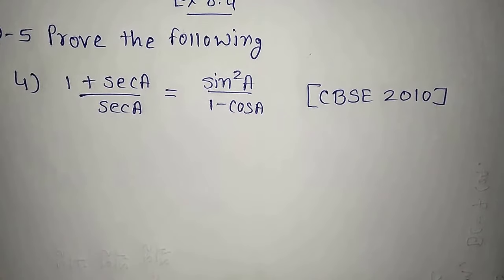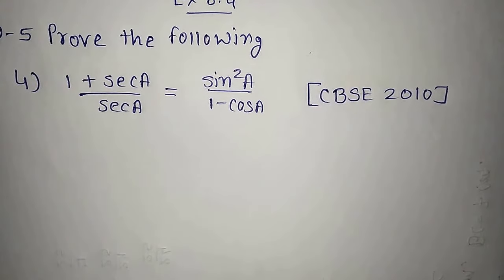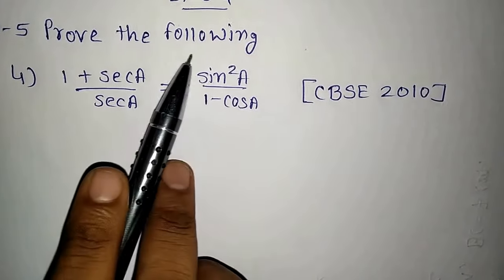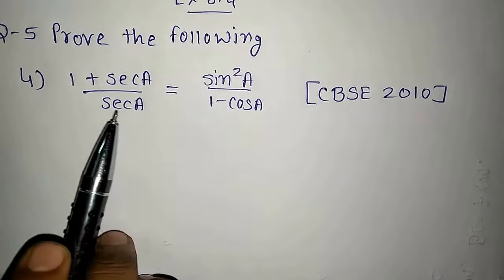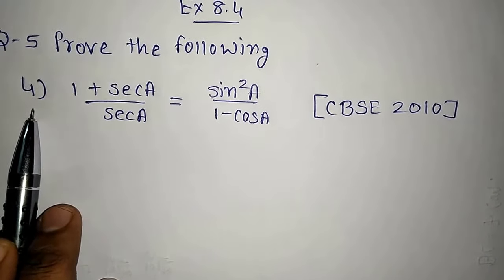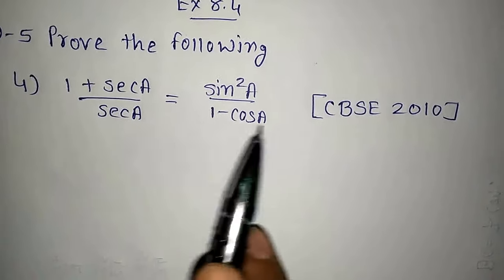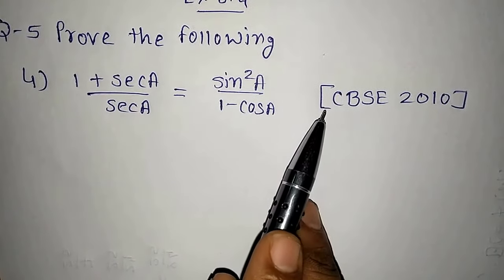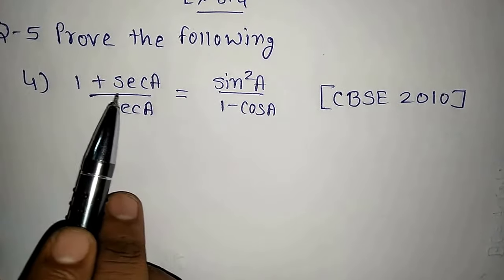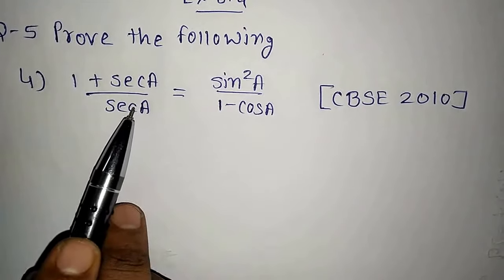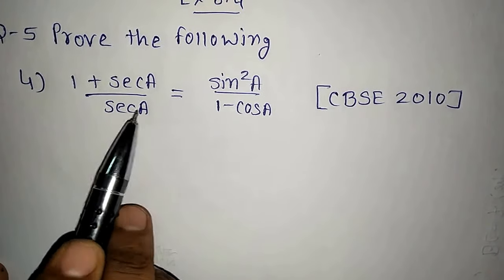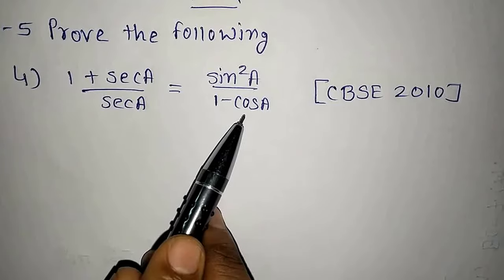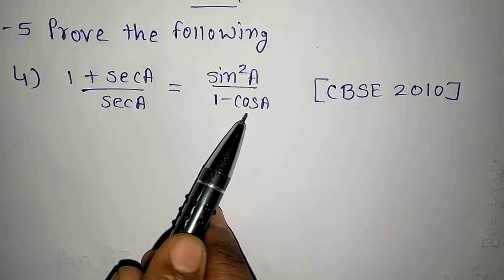One important problem from trigonometry — Exercise 8.4, question 5: prove the following. Question number 4, which has been asked in the CBSE 2010 board exam. The problem is: 1 plus sec A upon sec A is equal to sin square A upon 1 minus cos A.